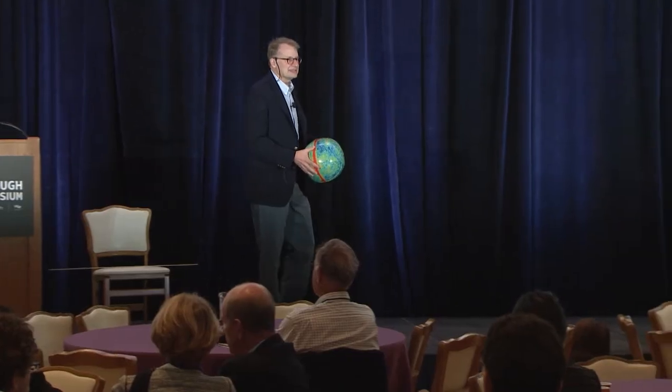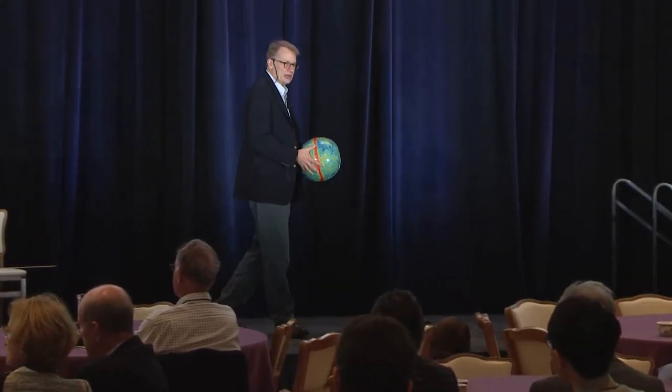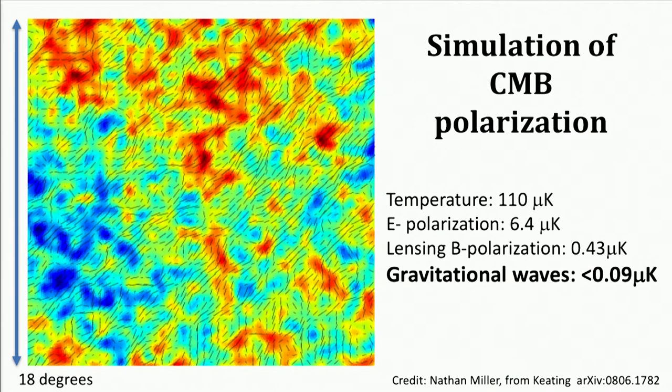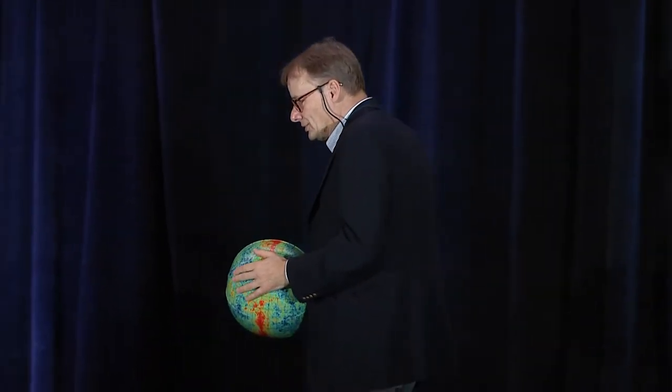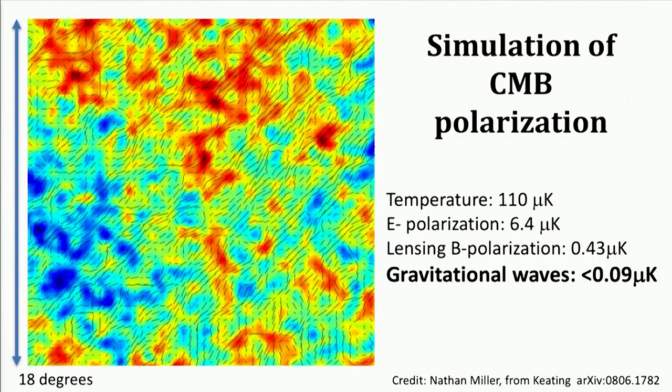We know that this gravitational wave signature in polarization — a very particular characteristic signature — has to be less than something like 90 nanokelvin. In the next decade, from looking at all our numbers, we should be pushing that down by a factor of 10. That's our goal — it's really exciting, and stay tuned.